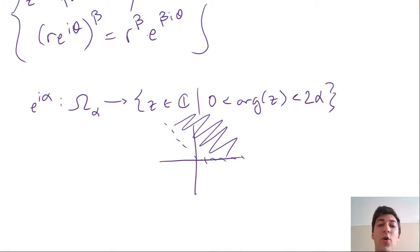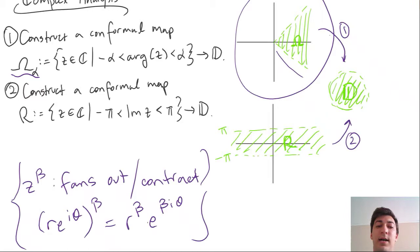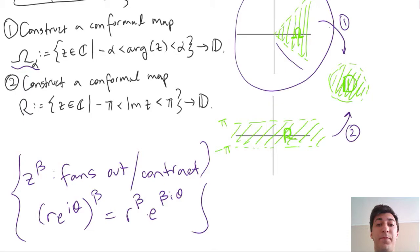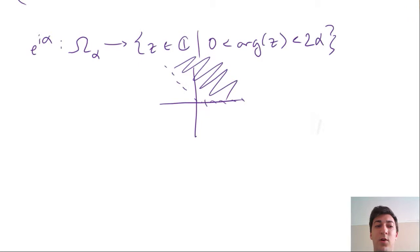If I'm trying to get it to the disk, then ultimately I could use the Cayley transform if I have the upper half plane. I'll remind you of what that is in a moment. But let's see if we can get the upper half plane.